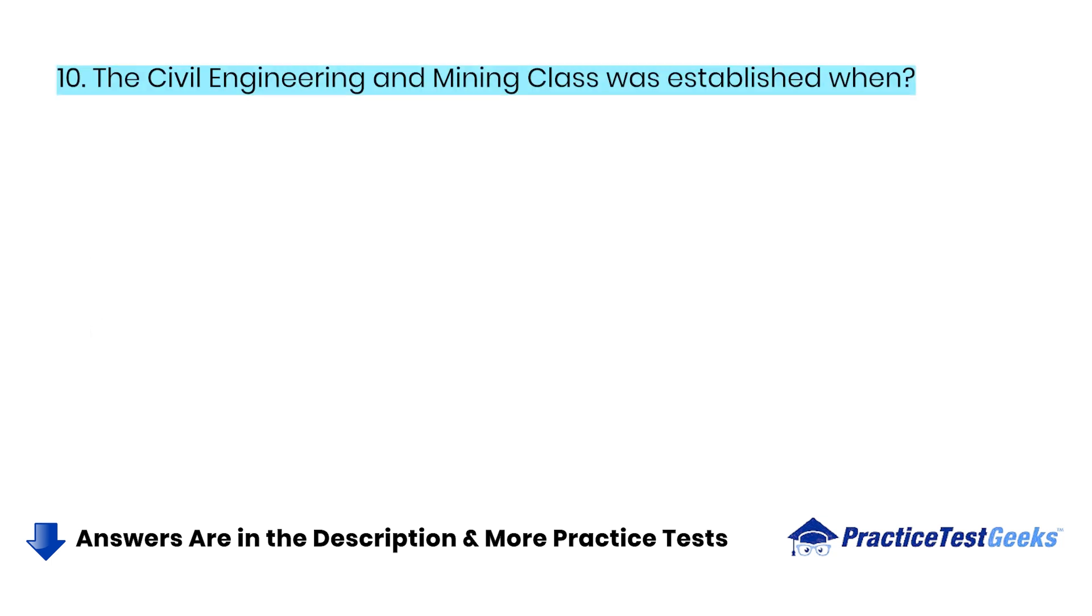The Civil Engineering and Mining class was established when? A. 1818. B. 1838. C. 1840. D. 1905.